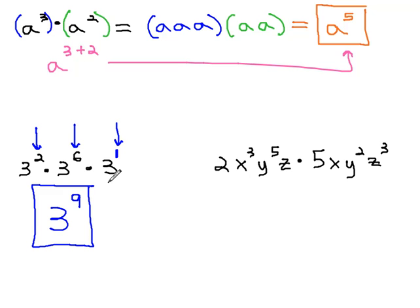On the right side, we have 2x cubed y to the fifth z, times 5xy squared z cubed. We can multiply numbers like always. This property has not changed. 2 times 5 is 10.